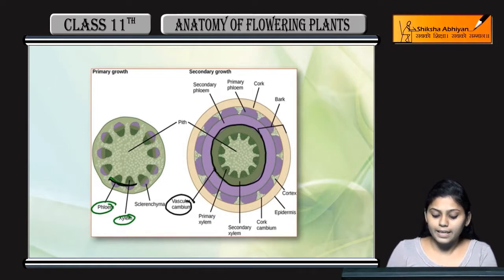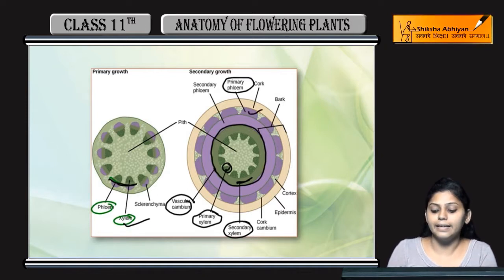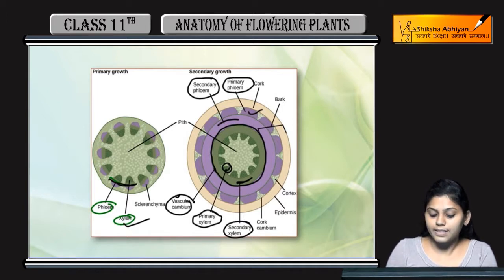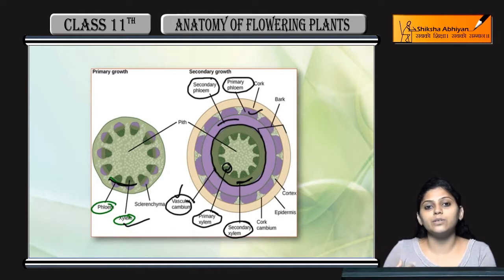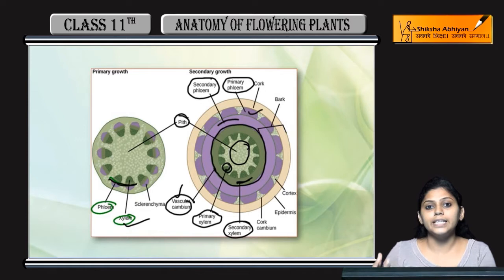पहले सिर्फ primary xylem था। Secondary xylem भी बन गया — this layer is of secondary xylem। ये primary phloem है और ये layer secondary phloem की है। So vascular cambium ने cell को cut किया — बाहर वाली side secondary phloem बनाया, अंदर वाली side को secondary xylem बनाया। Xylem जादा होते हैं as compared to phloem क्यूंकि अंदर वाली side की activation जादा होती है।